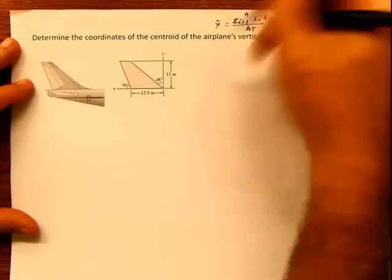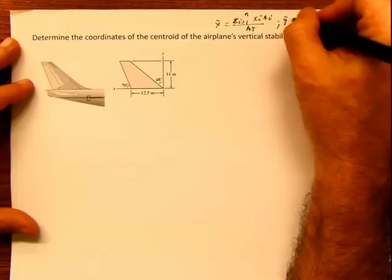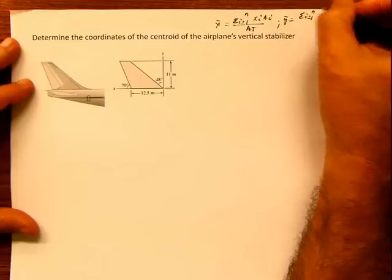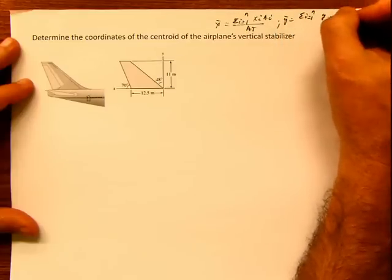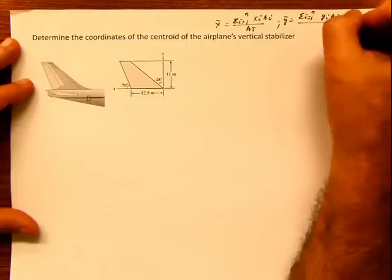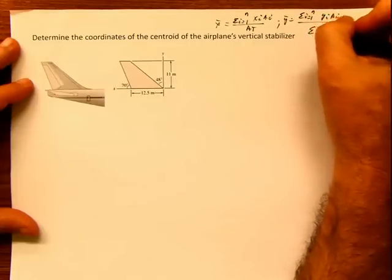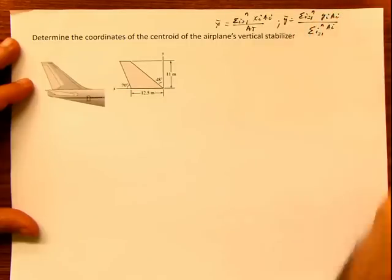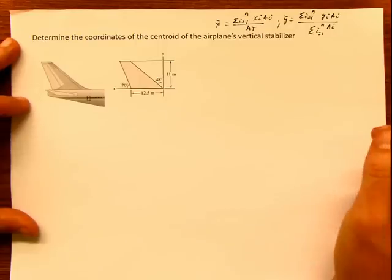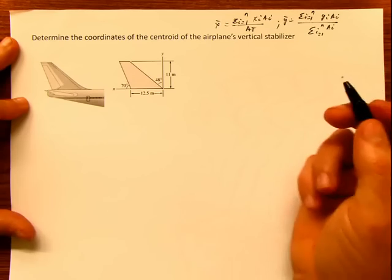And y bar is the summation from i equal 1 to n of xi ai divided by the summation from i equal 1 to n of ai. Those are our two formulas. It is a 2D problem. And this is what we have to do.